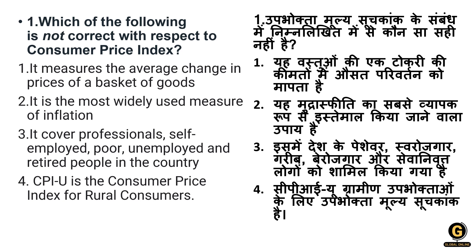Question 1: Which of the following is NOT correct with respect to the Consumer Price Index? The options are: it measures the average change in price of a basket of goods; it is the most widely used measure of inflation; it covers professionals, self-employed, poor, unemployed and retired people. However, option 4 — that CPI-U is a Consumer Price Index for rural customers — is the incorrect statement, making option 4 the correct answer.